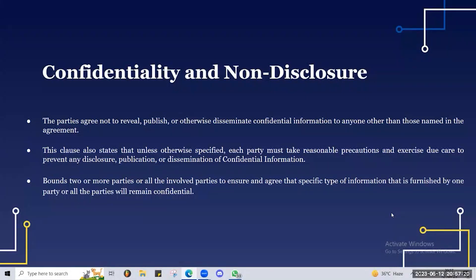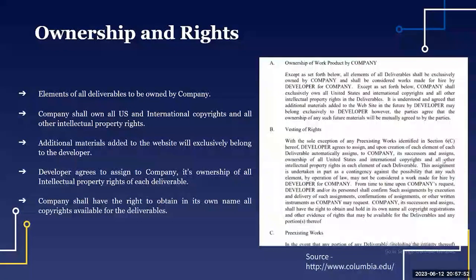If something is confidential, you've got to take care around it. Just like you take care of your assets — what is confidential is your asset and you cannot go around it. You cannot publish it without permission. This clause binds all the involved parties to ensure that specific information furnished by one party will remain confidential.